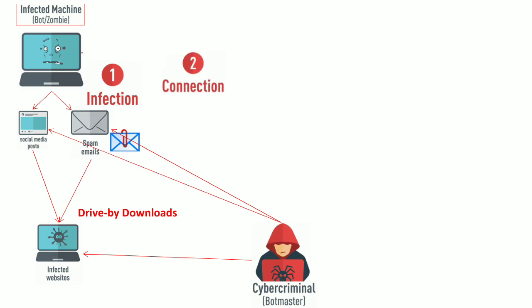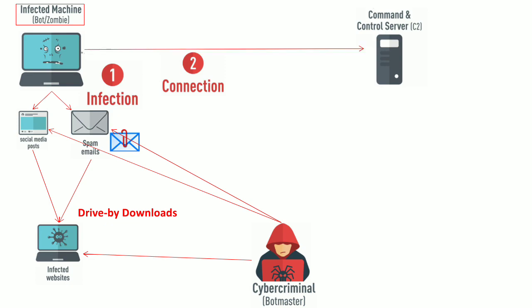The second phase is the connection phase, where the system establishes a connection with the command and control server established by this cyber criminal. The cyber criminal establishes a command and control server through which he will later deliver his commands to the infected bots. The bot or infected machines themselves connect to this command and control server, and this connection may be carried out periodically or upon completion of a specific logic — for example, on a specific date and time, or upon detection of specific traffic in the target network.